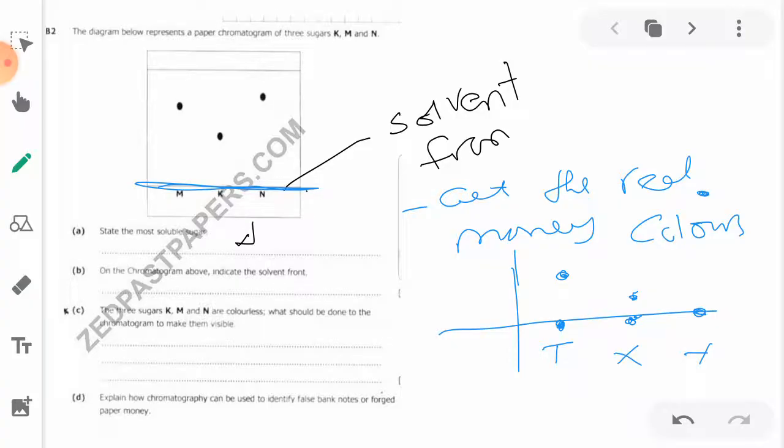These will be considered fake because they are not in the same line as the true money. You can see that X has moved this and Y has moved that. Are they in the same line? No. That's how you can identify fake money. Just get samples of the true money, then compare it with the false monies in their solubilities and how they move.